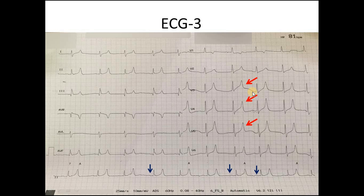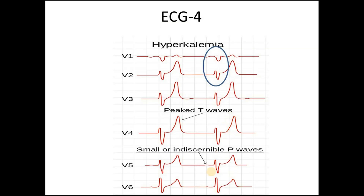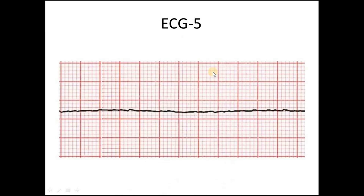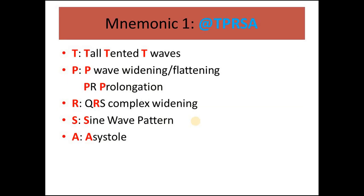In the third ECG, red arrows show the tall and tented T waves, and dark blue arrows show the flattening or absence of the P wave — a typical feature of hyperkalemia. The fourth ECG again shows tall tented T waves, small or flat P waves, and a wide QRS complex. The fifth ECG shows asystole, which is the end result of severe hyperkalemia if not treated in time.